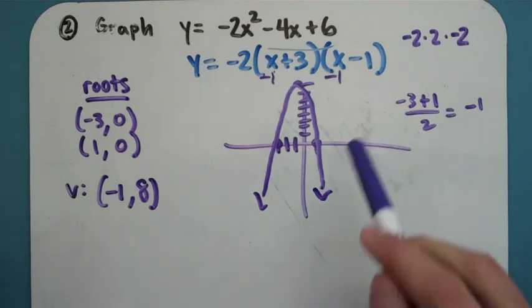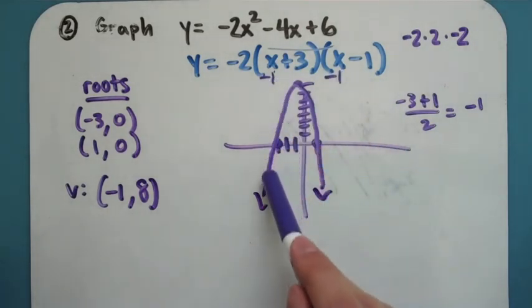So once something's in factored form, you can pick out those x-intercepts, those zeros really quickly.